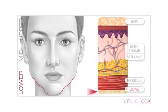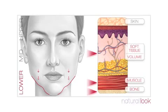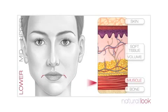Loss of bone along the junction of the lower face and neck leads to a loss of jawline definition. When combined with decreased muscle elasticity and the descent of the overlying volume, this leads to the appearance of jowls. Repeated muscle action around the mouth causes the corners of the mouth to turn downward, and repeated muscle action in the chin leads to dimpling of the chin.